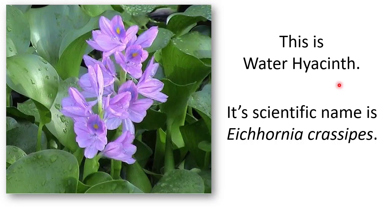Aap sabhi jantay hai that each and every species of plant and animal has been given a certain scientific name. Aap ko karan bhi pata hai kyo in ko scientific name alag se diya jata hai. To vyse hi bachcha, water hyacinth ka bhi scientific name doosra hai, that is Eichhornia crassipes.